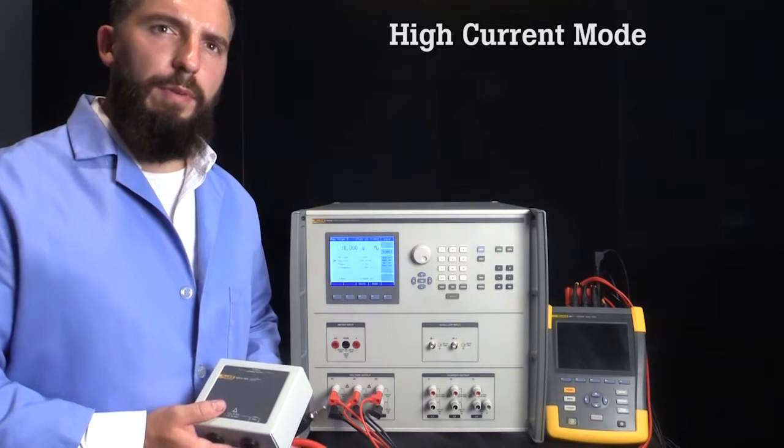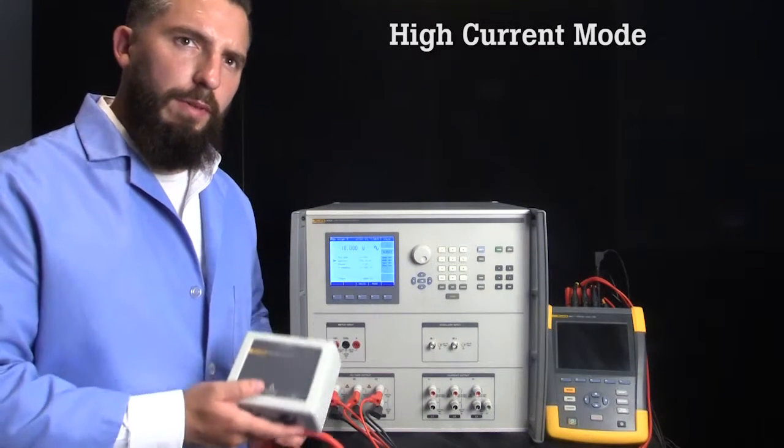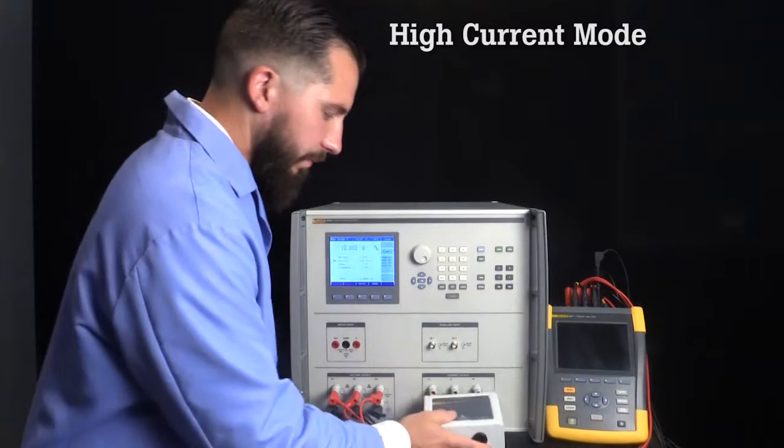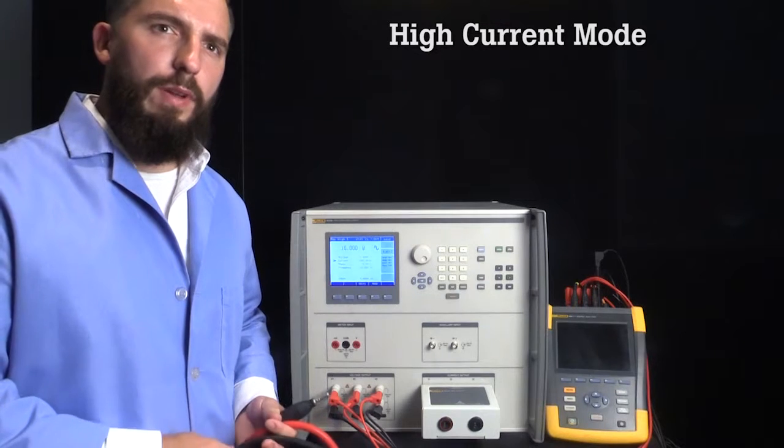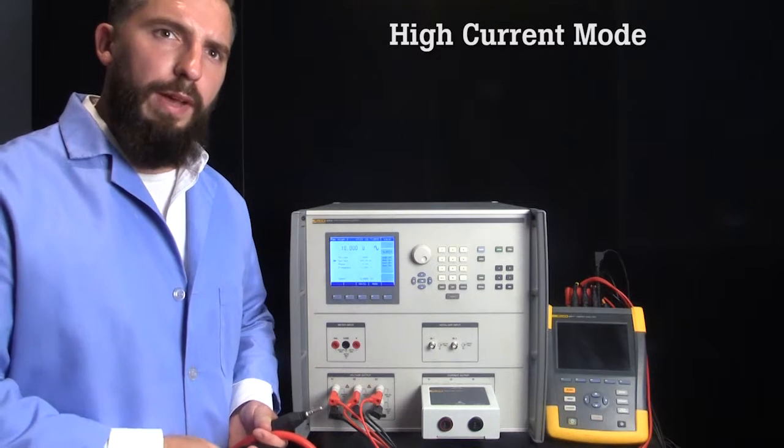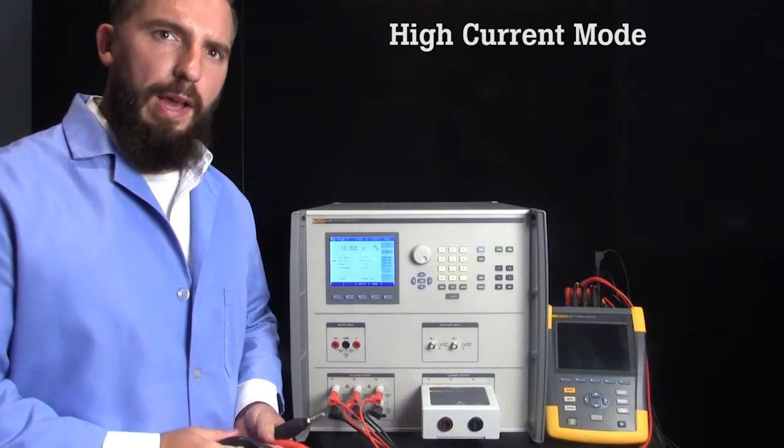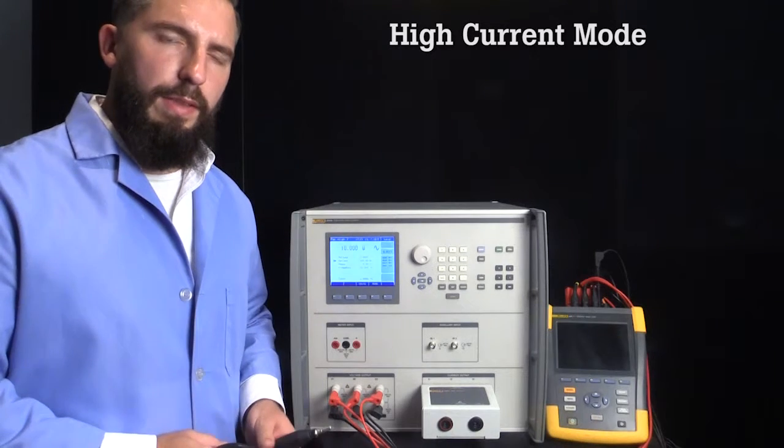The functionality of the 6003A can be easily expanded to output 90 amps high current with the high current adapter. The high current mode parallels all three current channels and can provide a maximum of 90 amps output in a single phase.